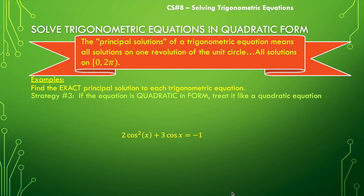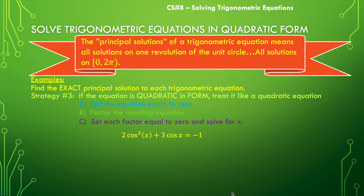With these types of examples, we will be seeing equations that are quadratic in form. If you have an equation that's quadratic in form, you are just going to treat it like a quadratic equation. First, set the equation equal to zero. Then we're going to substitute out the trig function so we can look at it more objectively like a true quadratic. Then we'll factor it, set each factor equal to zero, and solve for x.